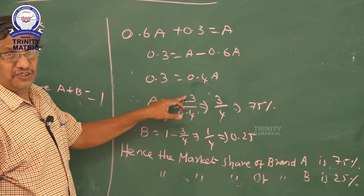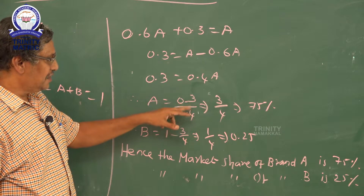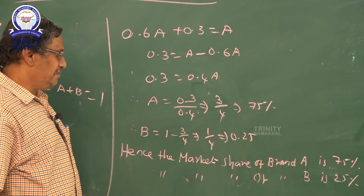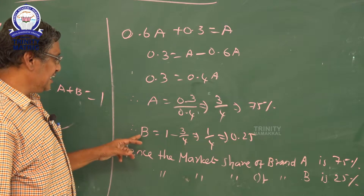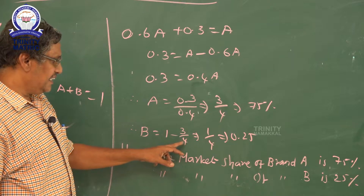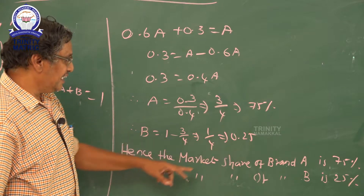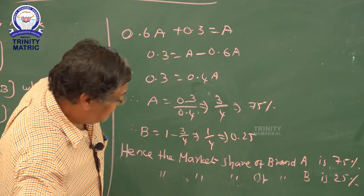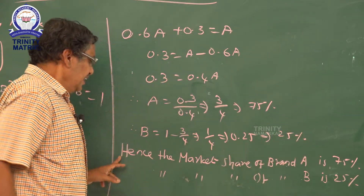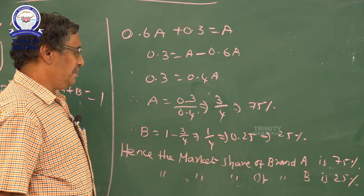Both have one decimal point, so multiply numerator and denominator by 10 to remove the decimal point. We get 3 by 4, which in percentage is 75 percent. So B equals 1 minus A, that is 1 minus 3/4 equals 1/4, which is 25 percent. Therefore, the market share of brand A is 75 percent and the market share of brand B is 25 percent.